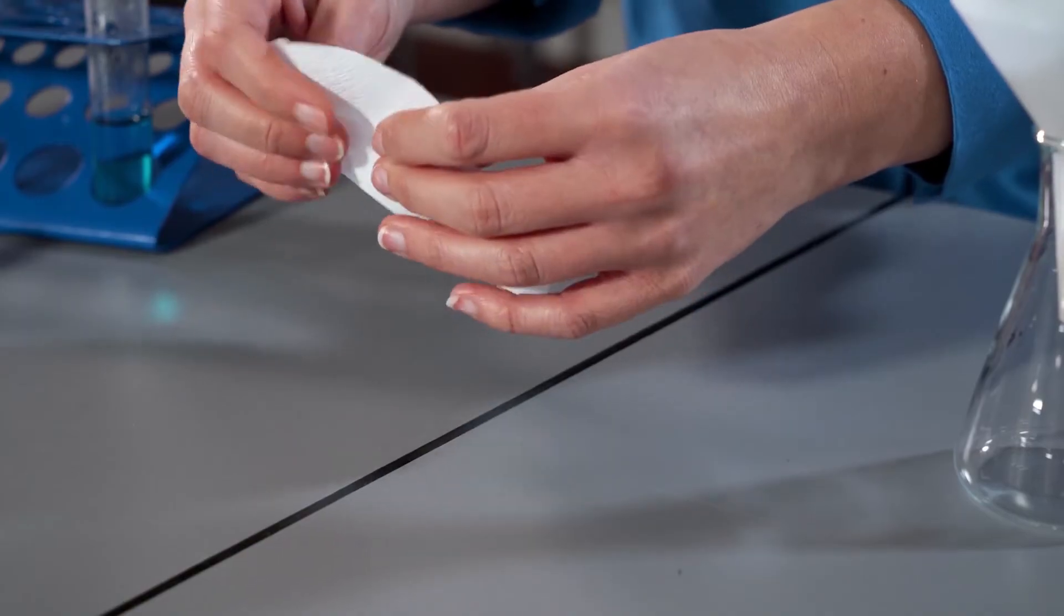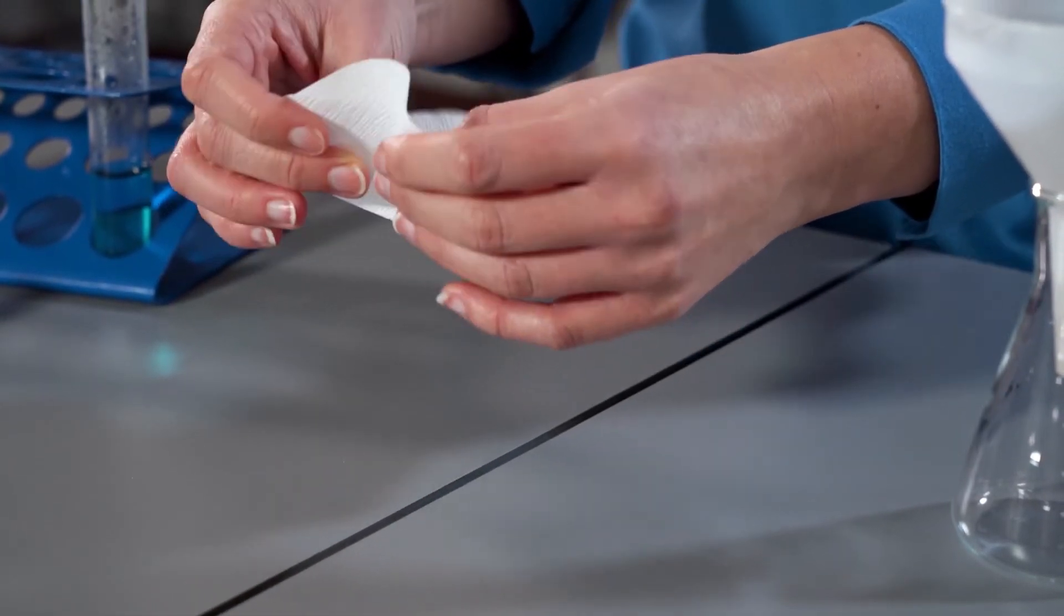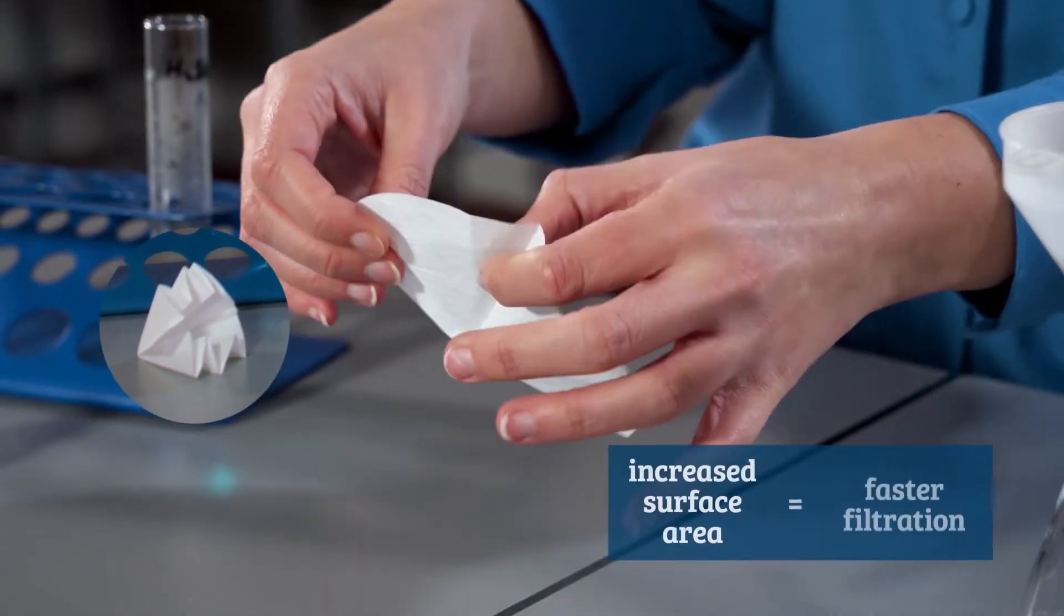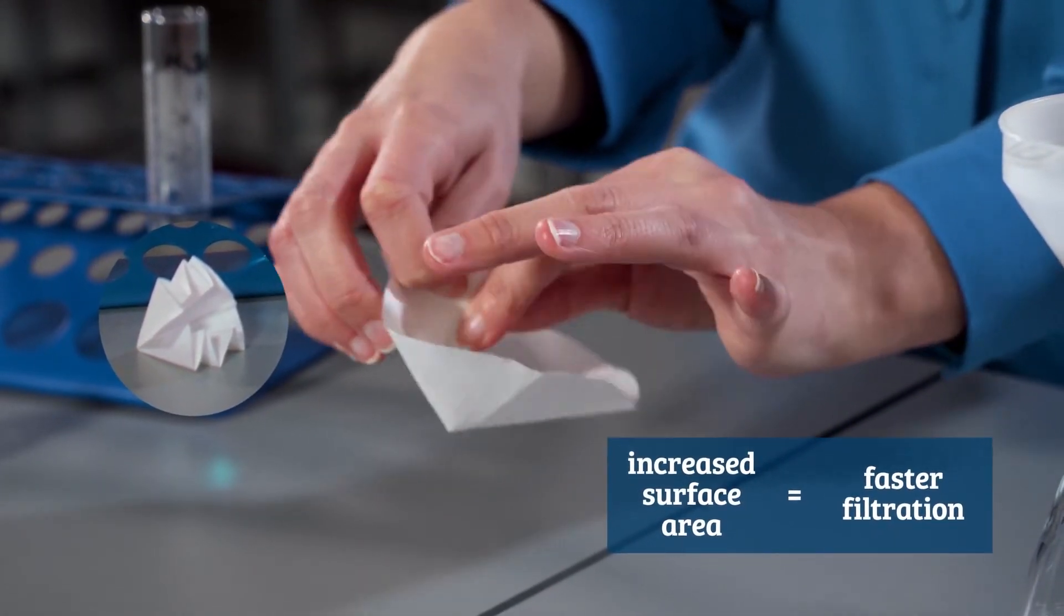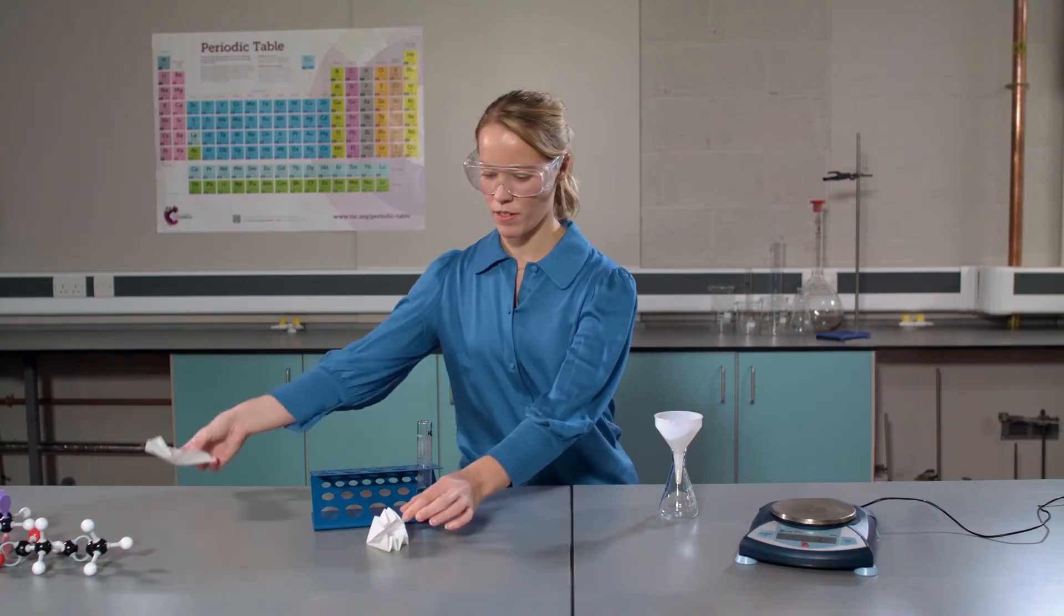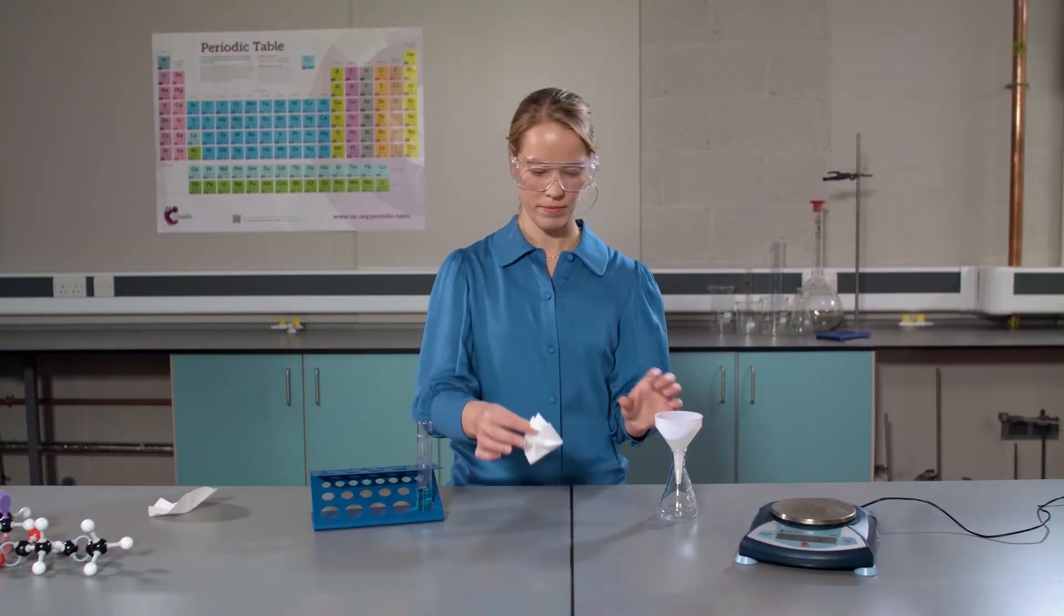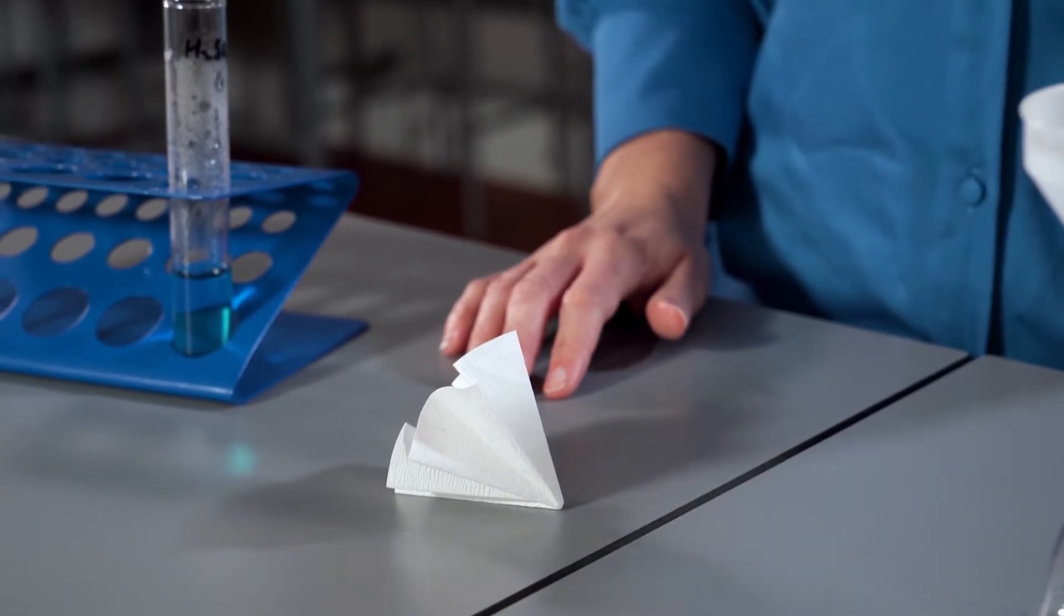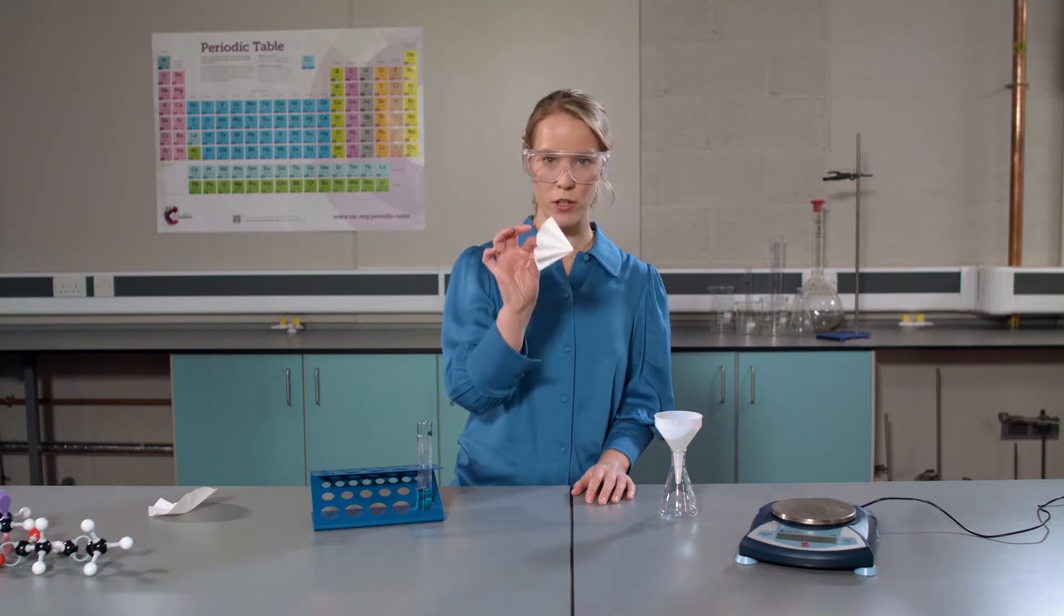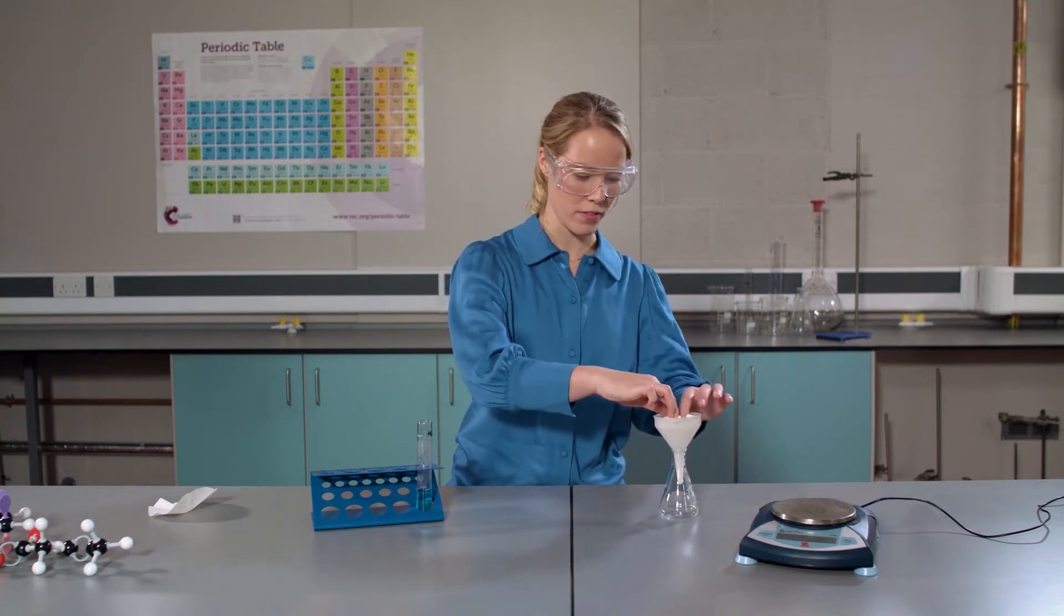We will then start making indents between these segments. Here is one I made earlier. I have already placed a filter funnel in a 100 centimeter cubed conical flask and I will place my fluted filter paper into my funnel.